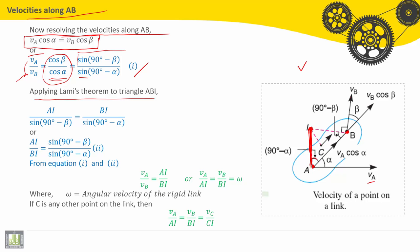If we apply Lami's theorem, so AI divided by sine of the opposite angle, 90 minus beta, equals—take another color—BI divided by sine of the opposite angle, which is 90 minus alpha.